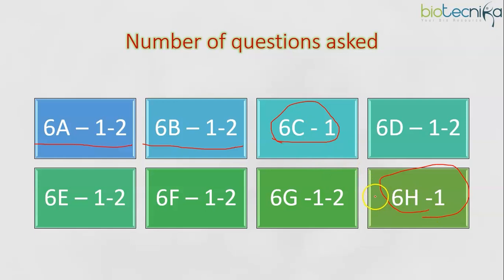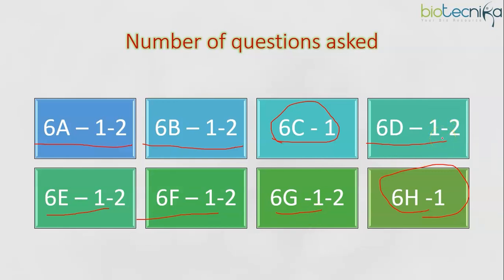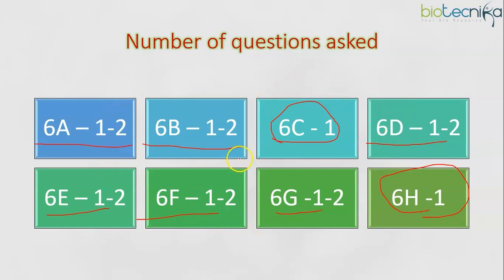That question could be in the form of match the following or a statement-based question. For the remaining subunits — plant hormones, sensory photobiology, solute transport, and secondary metabolites — I've given a maximum of two. Tentatively, one or two questions can be expected, from Part B or Part C or both. This depends upon the examination, but this is the maximum number of questions you can expect from each subunit.